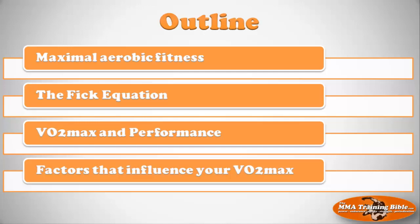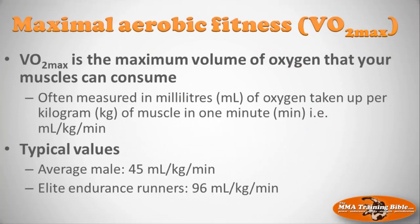What is maximal aerobic fitness? Simply put, VO2 max is the maximal volume of oxygen that your muscles can consume. It's often measured in milliliters of oxygen taken up per kilogram of muscle per minute, or mL/kg/min, though it's sometimes also measured in liters per minute. Typical values: for the average male it's about 45 mL/kg/min, a little lower in females due to generally smaller muscle mass, while elite endurance runners can reach around 96 mL/kg/min.